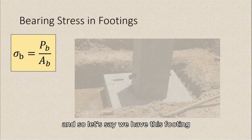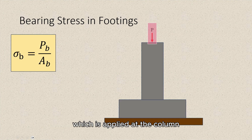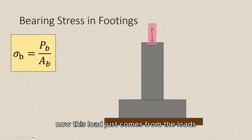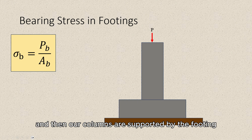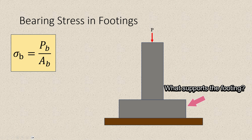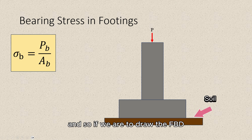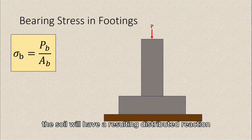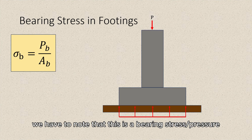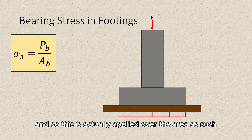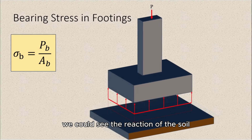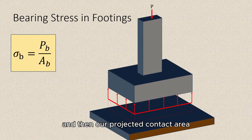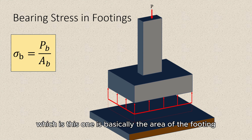Let's say we have a footing with a downward concentrated load P supplied at the column. This load comes from loads transmitted to the column from beams and girders — essentially, girders are supported by columns, and columns are supported by the footing. What supports the footing? It's actually the soil below. If we draw the FBD, the soil will have a resulting distributed reaction. This is a bearing stress applied over the area, and if we look at our figure in 3D, we can see the reaction of the soil. The projected contact area is basically the area of the footing.